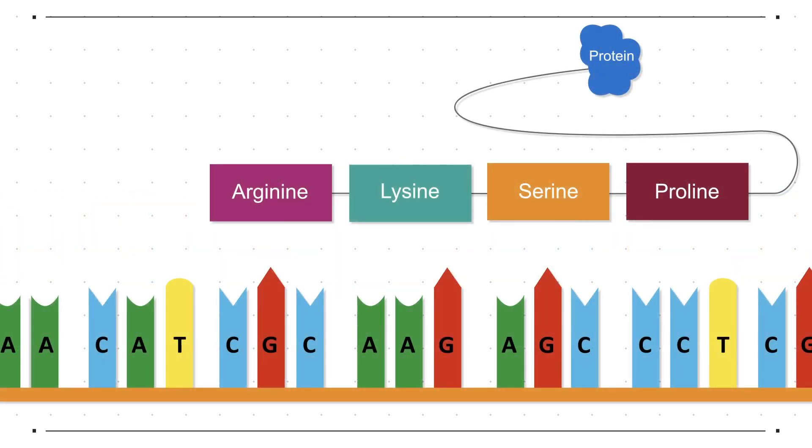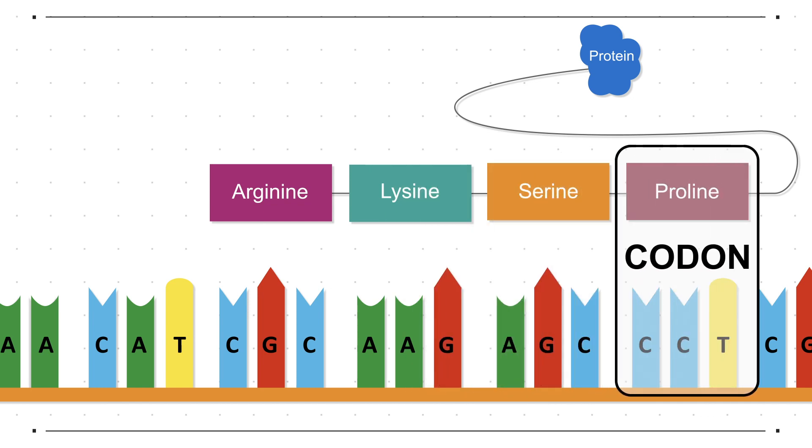Within each gene triplets of DNA bases called codons provide the code for each amino acid. The order of the codons determines the order of amino acids which determines the structure and function of the protein.